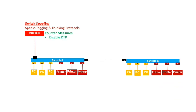To counter switch spoofing, we can disable the Dynamic Trunking Protocol and explicitly configure all the ports on switch A as access ports. An access port has the limitation that it can carry the traffic of only one VLAN at a time. By configuring all ports as access ports, the attacker cannot take advantage of the auto trunking feature and cannot convert an access port into a trunk port, even if his system is pretending to be a switch.